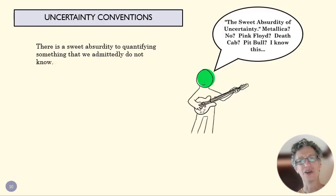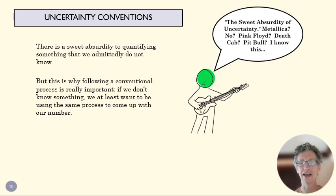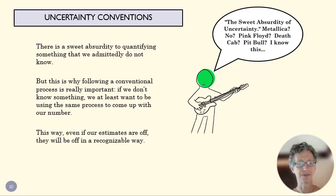So there's a sweet absurdity to quantifying something that we don't actually know. And so uncertainty is a process of estimation. But it's also because of that, we want to follow a conventional process. We want to make sure that everybody's doing the same way. So those numbers actually mean something, even if they are always going to be estimates. So if our numbers are off, they'll be off in a recognizable way.